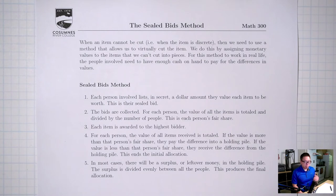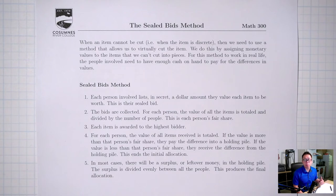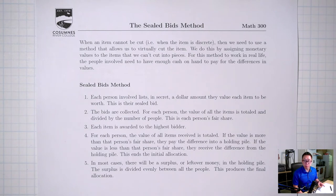Hello, welcome back. In the last lecture, we talked about two methods for sharing continuous items — items that you can cut up. We talked about food and land. The two methods were the divider-chooser method, which was for two people, and the lone divider method, which was for three or more people.